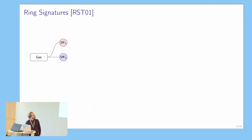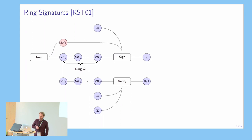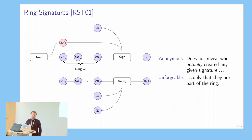Ring signatures are a special type of signature scheme which allow a signer to create a signature in the name of a group of potential signers, which is called the ring. This signature then has to be verified with respect to that same ring, and the signature has the nice property that it doesn't reveal who among this group of potential signers actually created the signature, but we can still be sure that they must have been part of the ring.